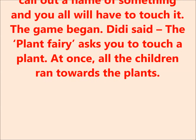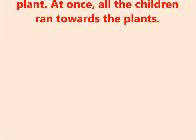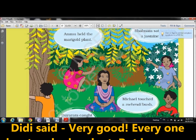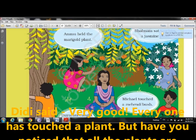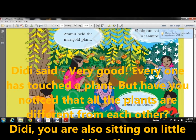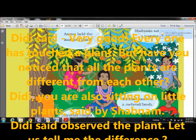The game began. Didi said the plant fairy asked you to touch a plant. At once all the children ran towards the plants. Amu held the marigold plant, Shabana sat touching a jasmine plant, Michael touched a mehendi bush, and Dayaram held a neem tree and stood there. Didi said now very good — everyone has touched a plant, but have you noticed that all plants are different from each other? Didi, you are also sitting on little plants, said Shabana.